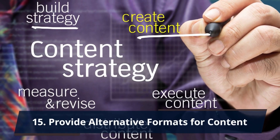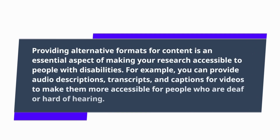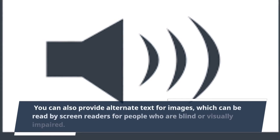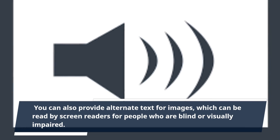Tip 15: Provide Alternative Formats for Content. Providing alternative formats for content is an essential aspect of making your research accessible to people with disabilities. For example, you can provide audio descriptions, transcripts, and captions for videos to make them more accessible for people who are deaf or hard of hearing. You can also provide alternate text for images, which can be read by screen readers for people who are blind or visually impaired.